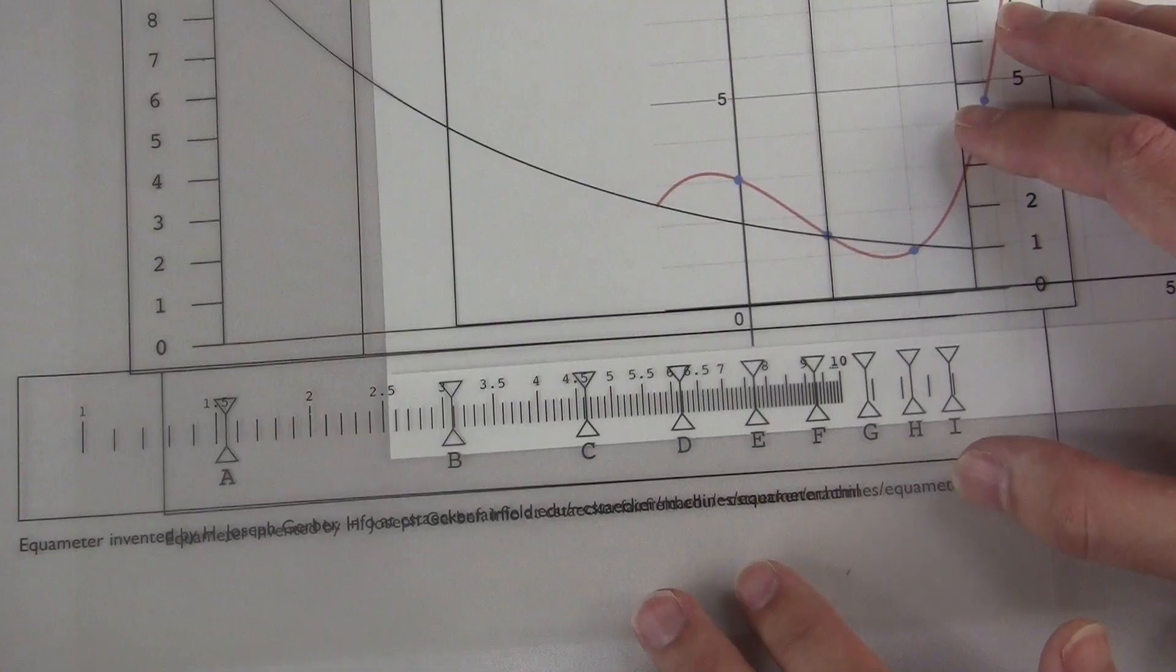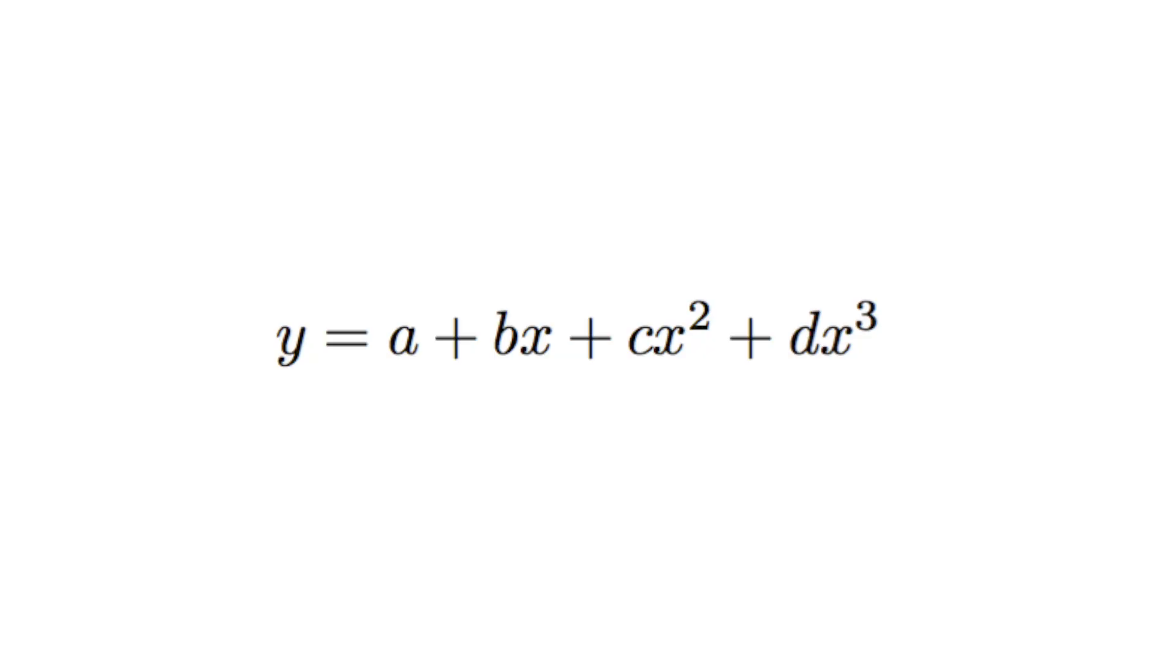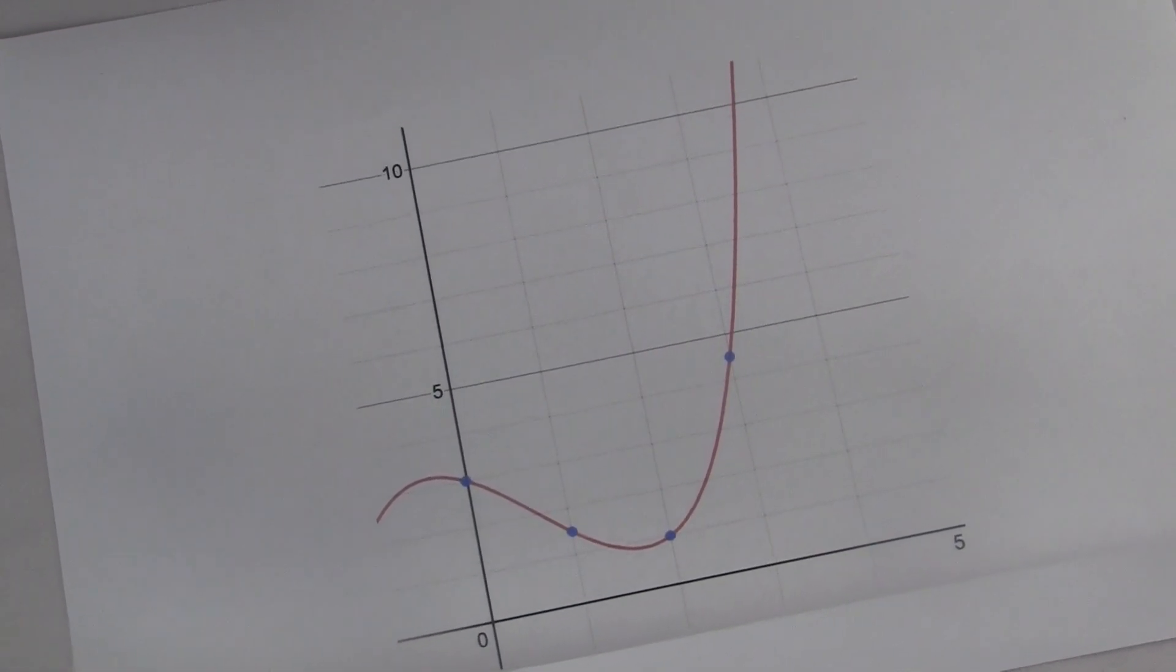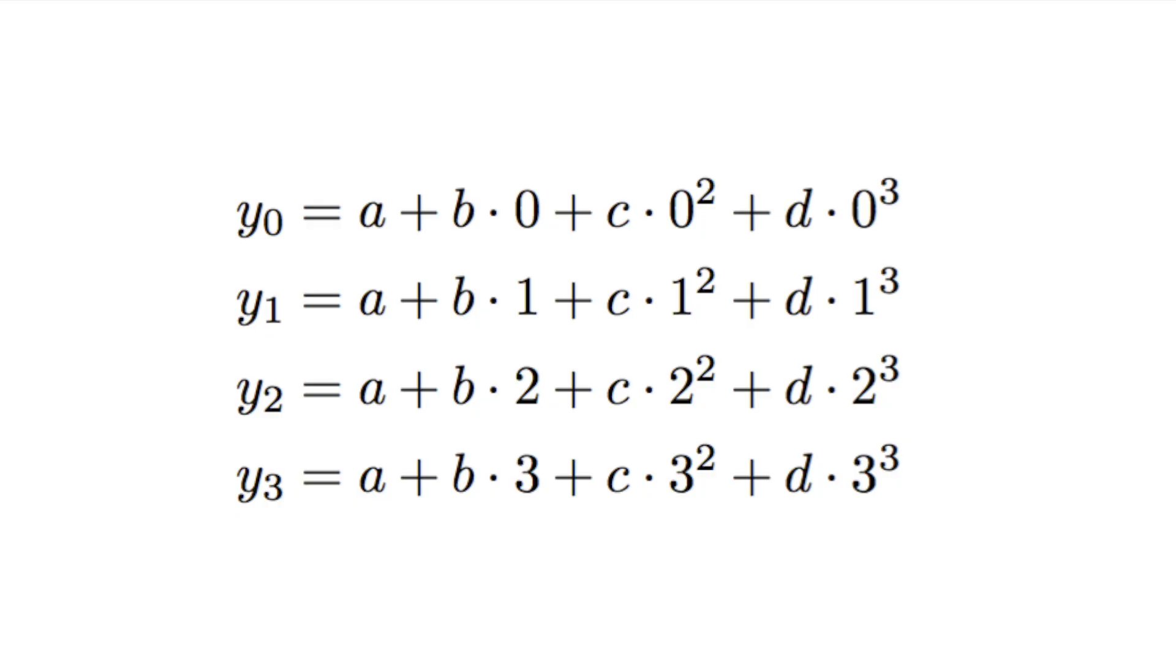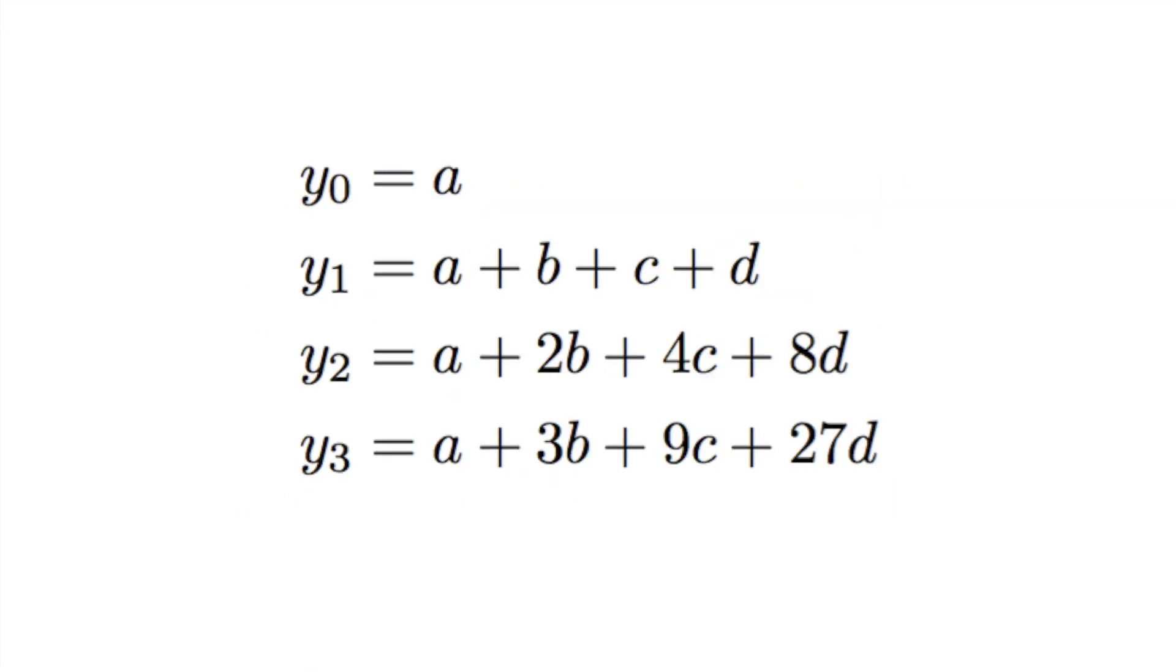Instead, Gerber used an approach based on some simple linear algebra. Like for the degree three polynomial, we need to figure out the coefficients to ABCD in this formula here. That's four unknowns. Now you can look on the graph and find four points and plug them each into the formula. And just for simplicity, let's use the points x equals 0, 1, 2, and 3. That gives us four corresponding y values. You can plug each of those points in to get four different equations.